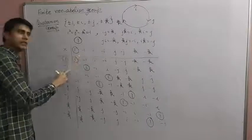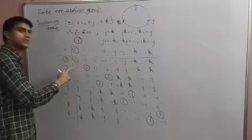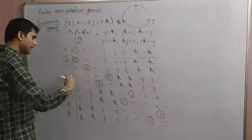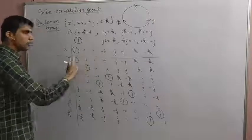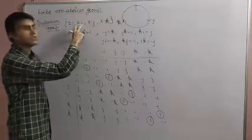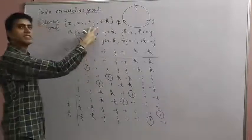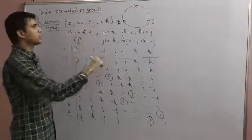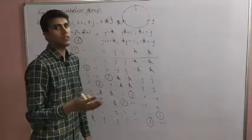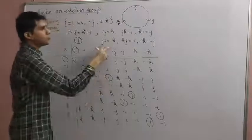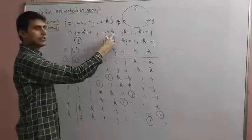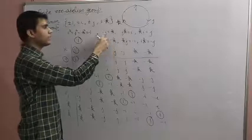For inverses: searching for the identity 1 in each row of the table. We find 1 is inverse of itself. Multiplying i and -i gives 1, so i and -i are inverses of each other.